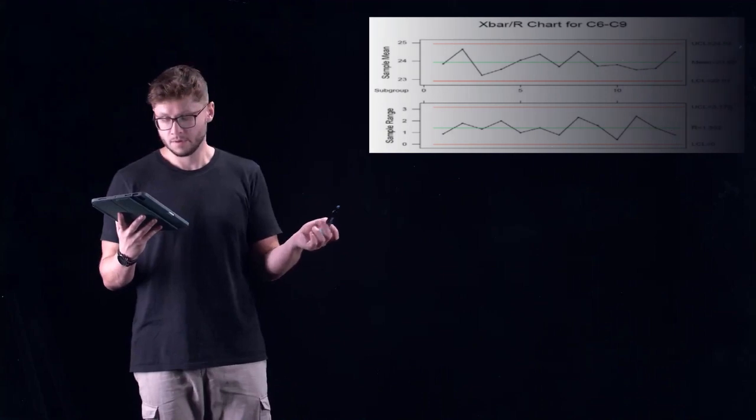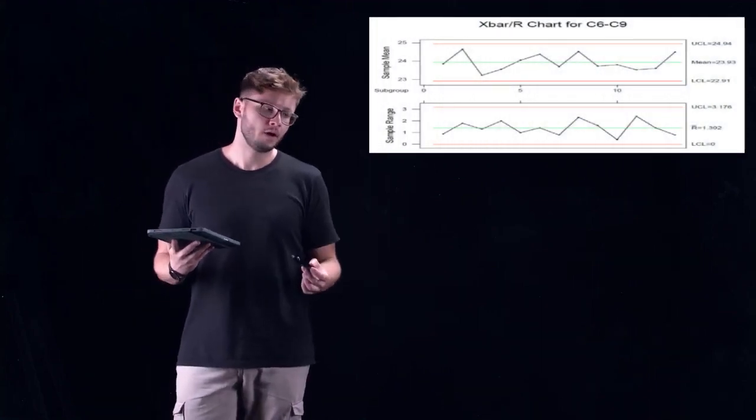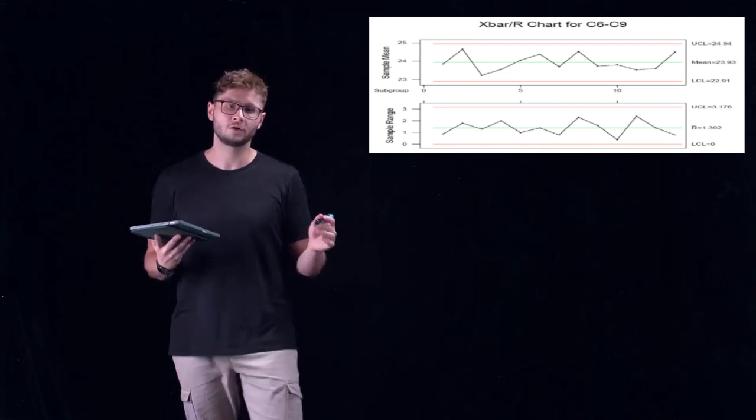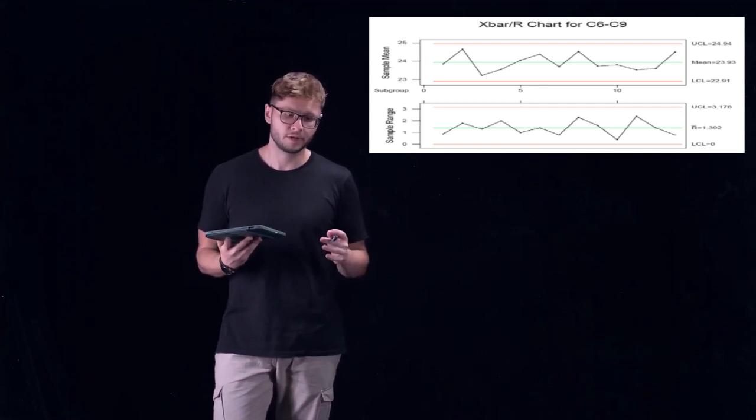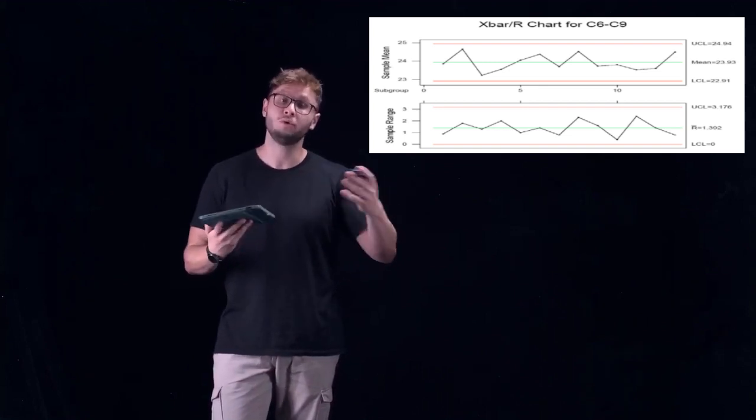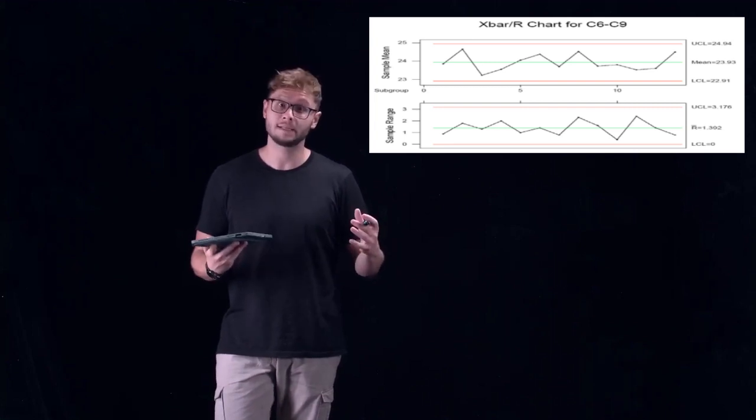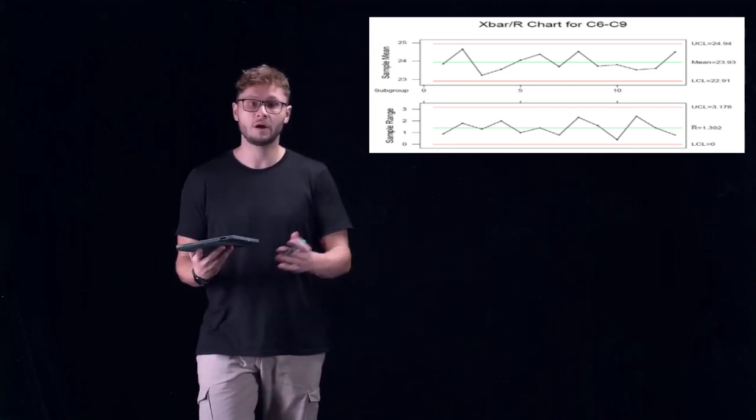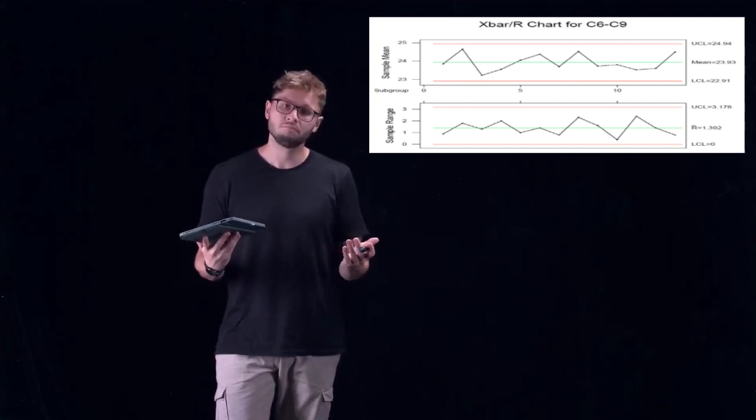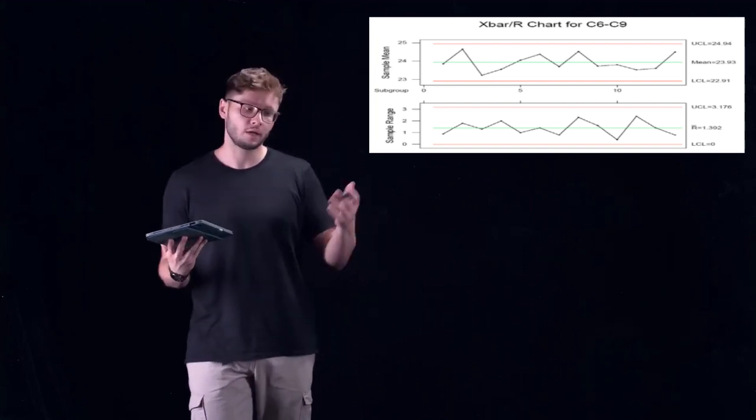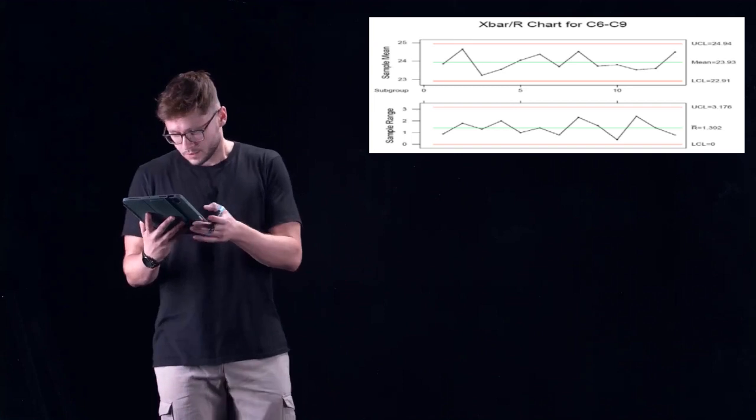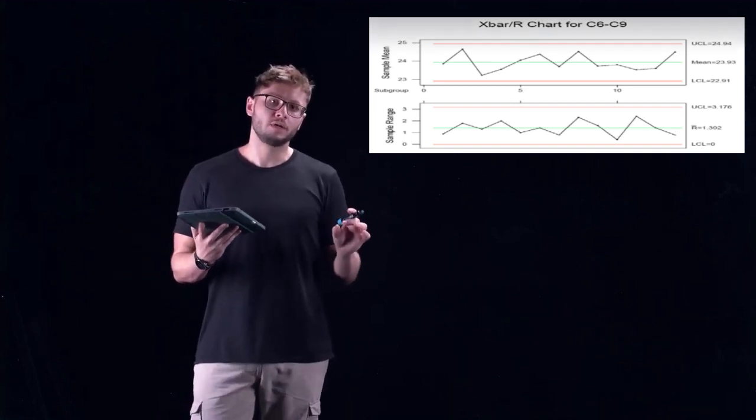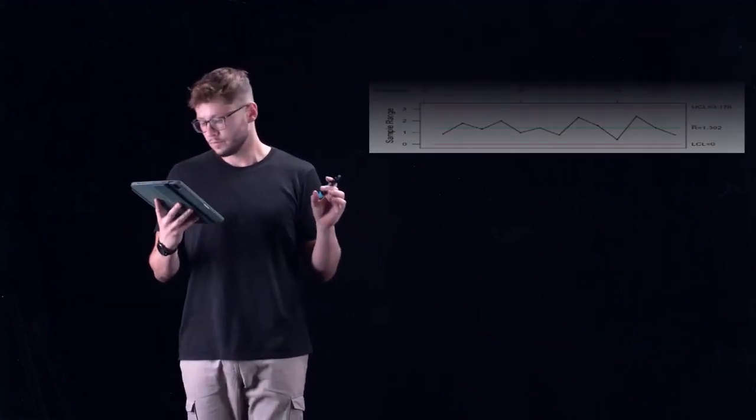Oftentimes what will happen is the problematic out of control samples will be removed from the production line and the testing pool will be retested to see if there are any other sources of improper quality or if anything else is out of control beyond the control limits. So as you can see here, everything is in control. Really, those were the only problematic groups of samples.